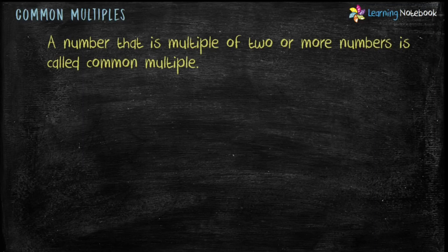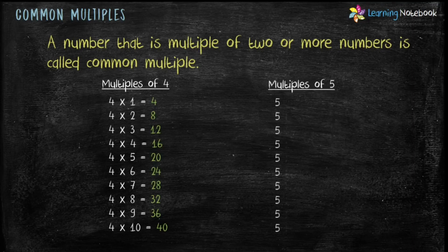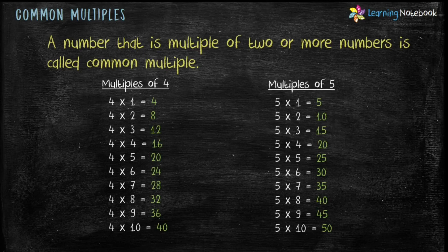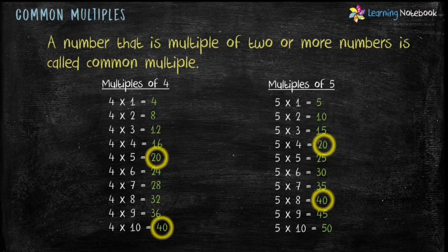Now students, let's understand common multiples. A number that is a multiple of two or more numbers is called a common multiple. Let's consider the first ten multiples of four and the first ten multiples of five. As you can see, 20 is a common multiple of four and five, and 40 is also a common multiple of both four and five. So 20 and 40 are common multiples of four and five.